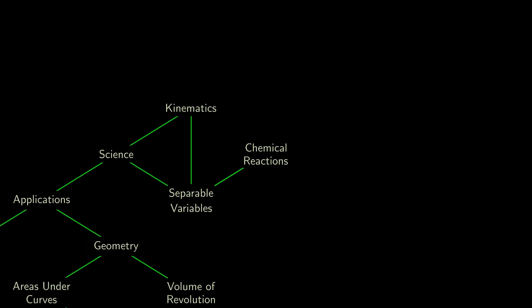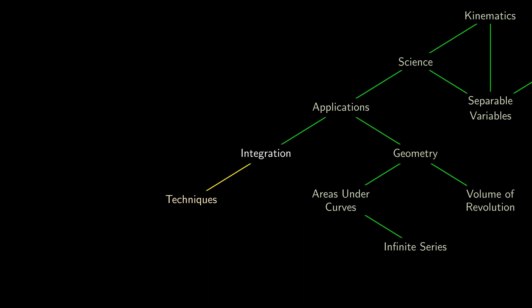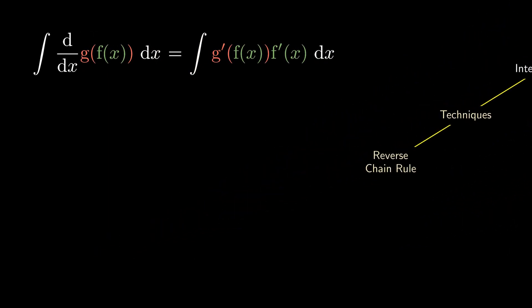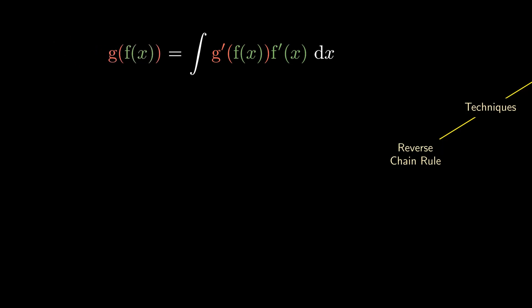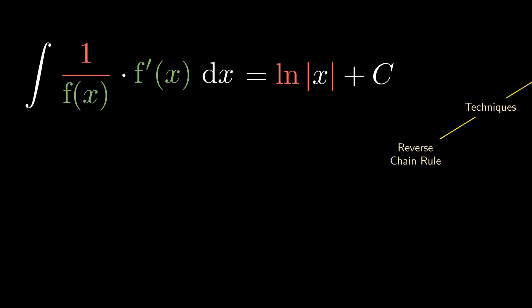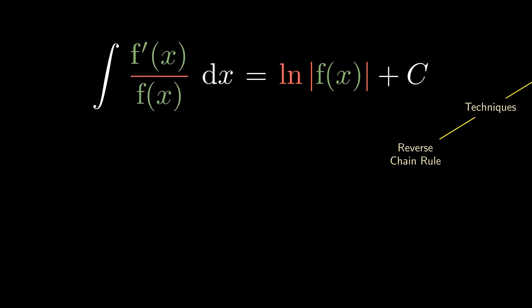These are the problems we can solve using integration. But how do we actually go about making these calculations? If one of the key formulae in differentiation is the chain rule, which helps us differentiate the composite function one layer at a time, then one of the most important tasks is to reverse the chain rule. We integrate on both sides — the left side gives the composite function, while the right side is a rather complicated integral. This is actually the most important formula in integration. We previously learned that the integral of 1 over x is the logarithm. So if we modify the left-hand integral by the reverse chain rule, the right side is also a logarithm, but this time we include f inside.